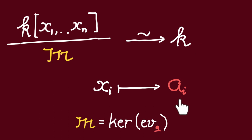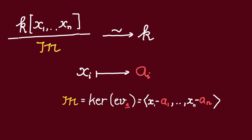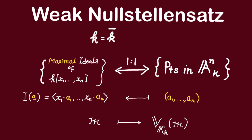If we let a_i be the images of the x_i, then we see that this map is just evaluation at the point (a_1, ..., a_n), and m is just the kernel of that. So, as we have established before, m is just going to be generated by x_i minus a_i. And thus, we see that when k is algebraically closed, every maximal ideal of the polynomial ring must be of this form.